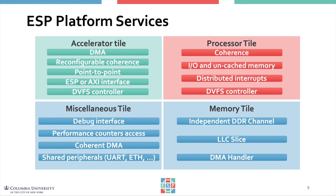In this case, the DMA transactions are routed either to memory as usual for shared memory communication, or they are routed directly to other accelerators for point-to-point communication.